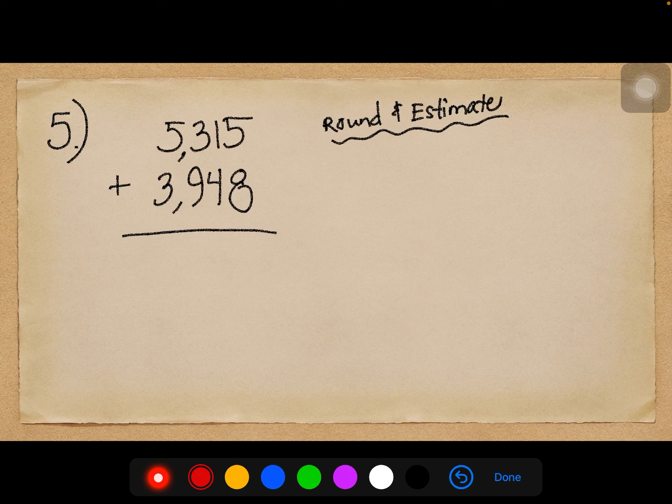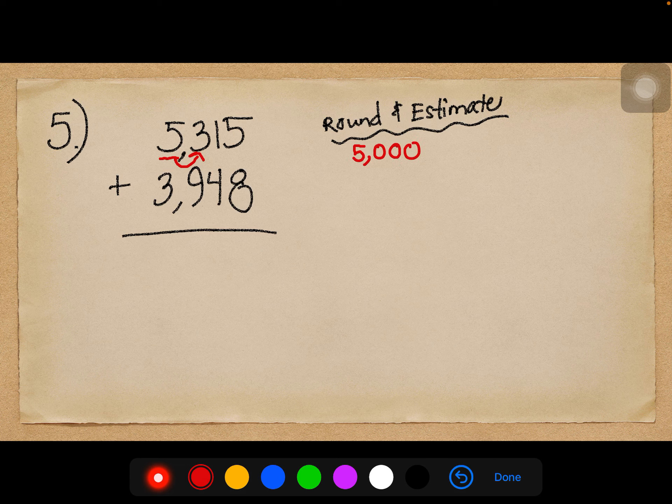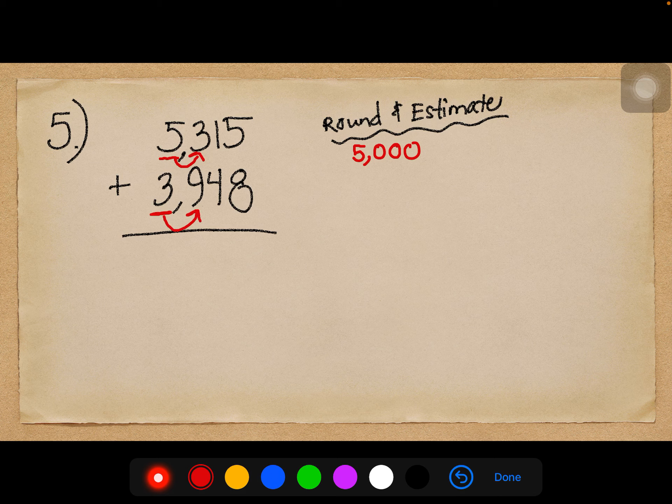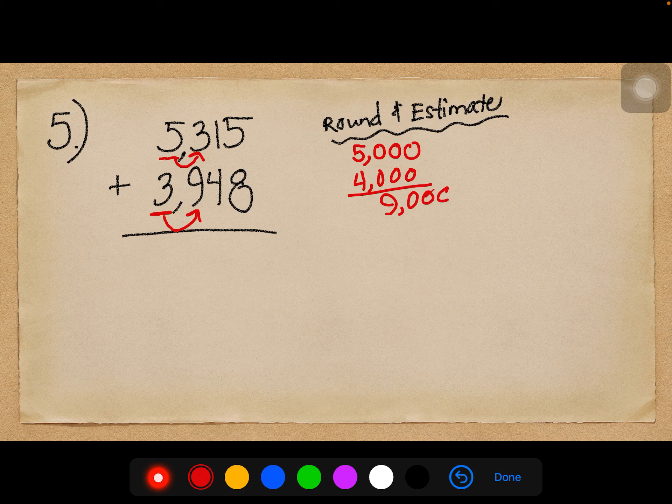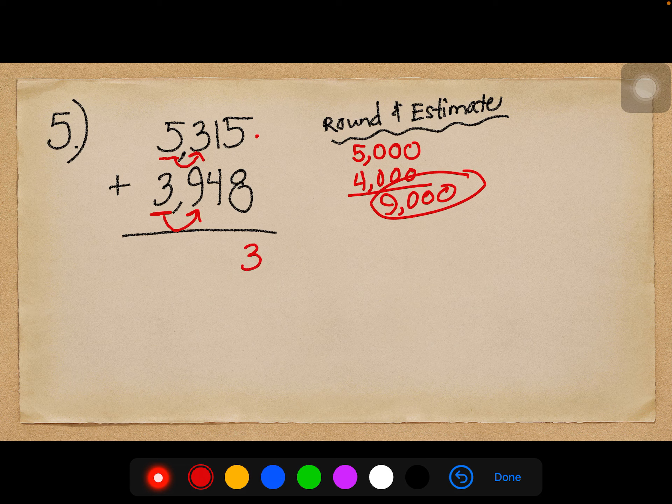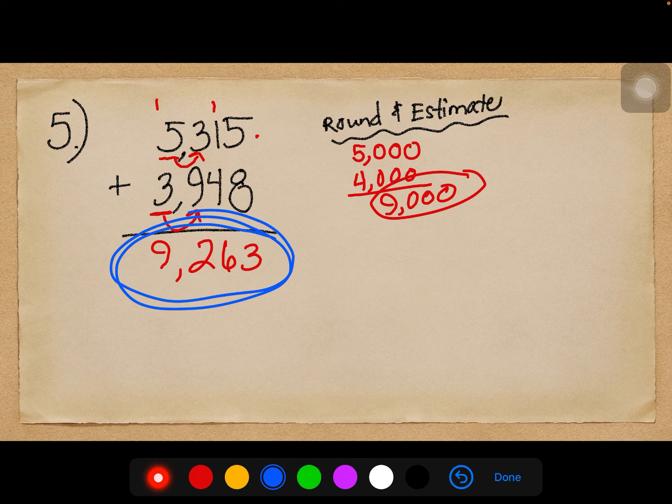Number 5. We have adding 4 digit numbers. I'm going to round and estimate. So I'm going to go to my largest place value, which is a 5. Check the neighbor to the right. Is it 5 or higher? No. So the 5 stays the same, and the rest become zeros. Same thing here. Check the neighbor to the right. Is it 5 or higher? Yes. So the 3 goes up, and the rest become zeros. So I'm estimating my answer to be right about 9,000. So let's go ahead and add. 8 plus 5 is 13, carry the 1. 4 plus 2 is 6, 9 plus 3 is 12, carry the 1. 5 plus 3 is 8, plus one more is 9. So is 9,263 pretty close to 9,000? Yes, it is. So I'm going to go ahead and say this is my final answer.